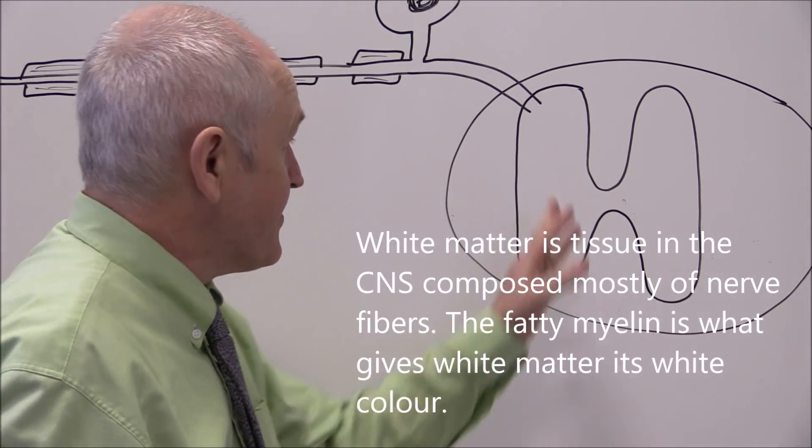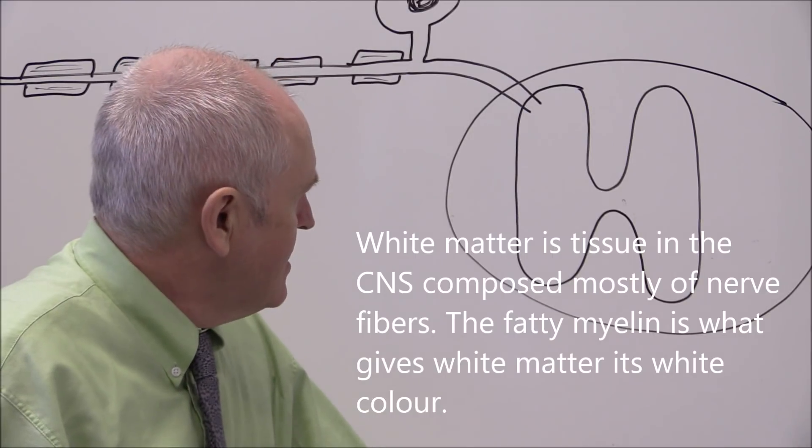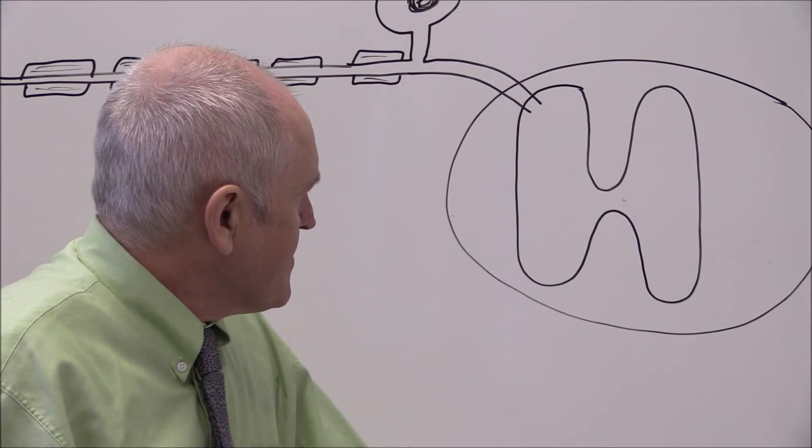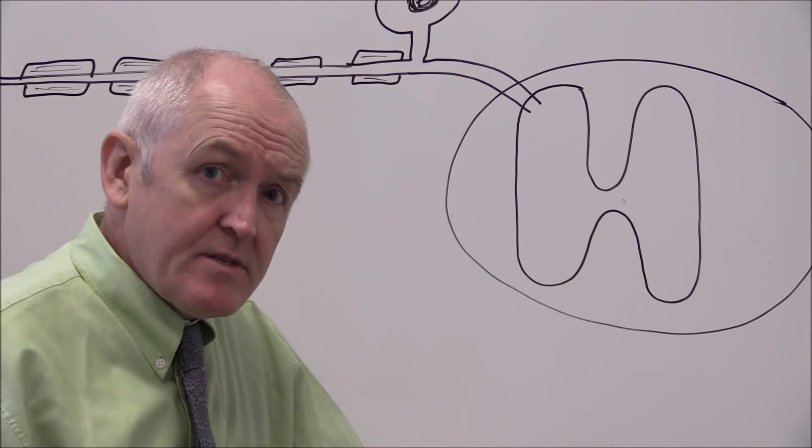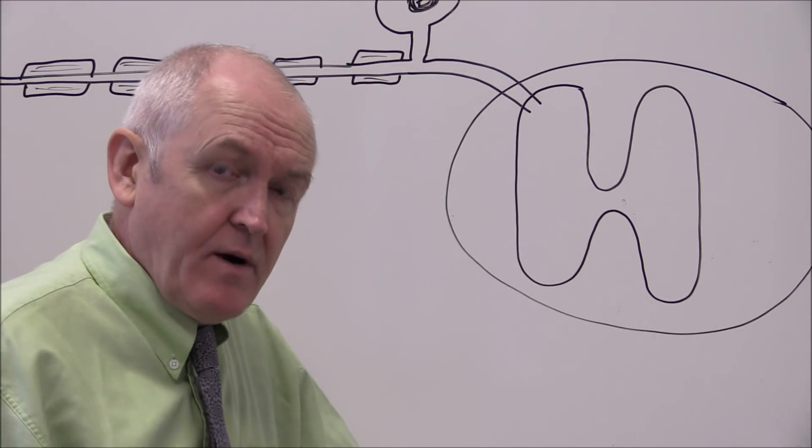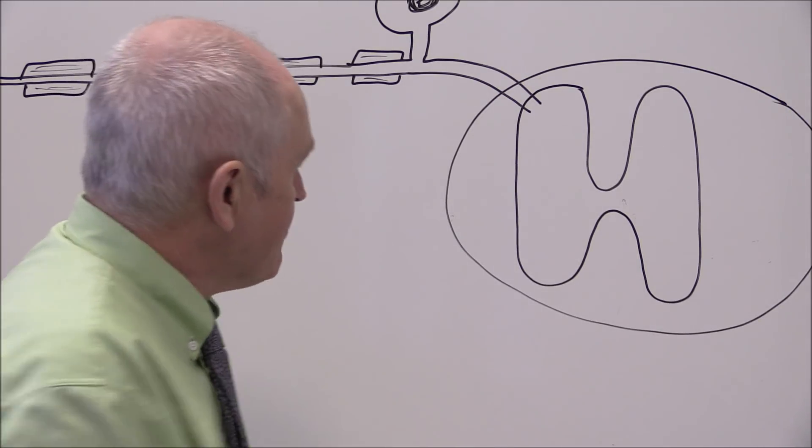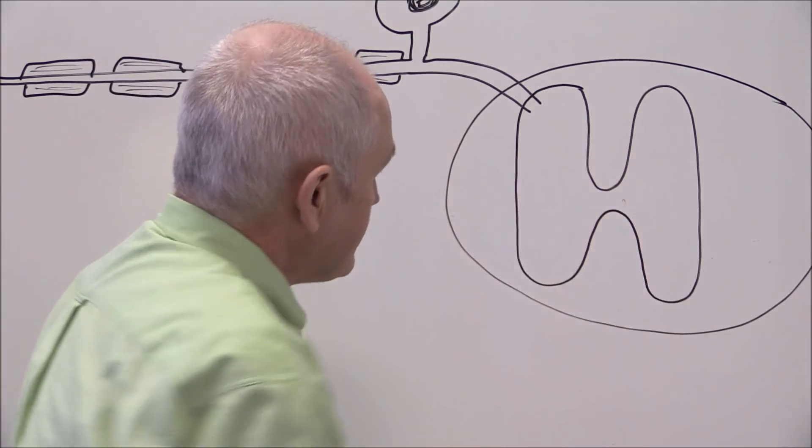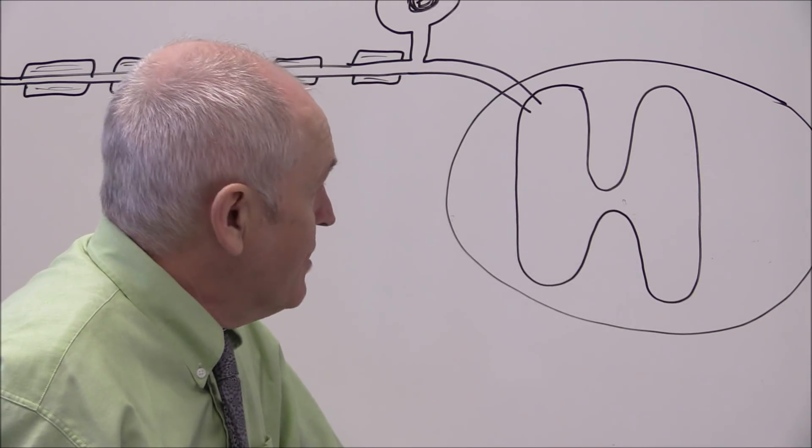Actually in life the grey matter is more pinky color; grey describes the post-mortem color. But the white matter around the outside is largely nerve cell fibers. It's white because of the myelin sheath which is fatty, therefore white. And the grey matter in the middle is grey because it's fairly rich in nerve cell bodies.